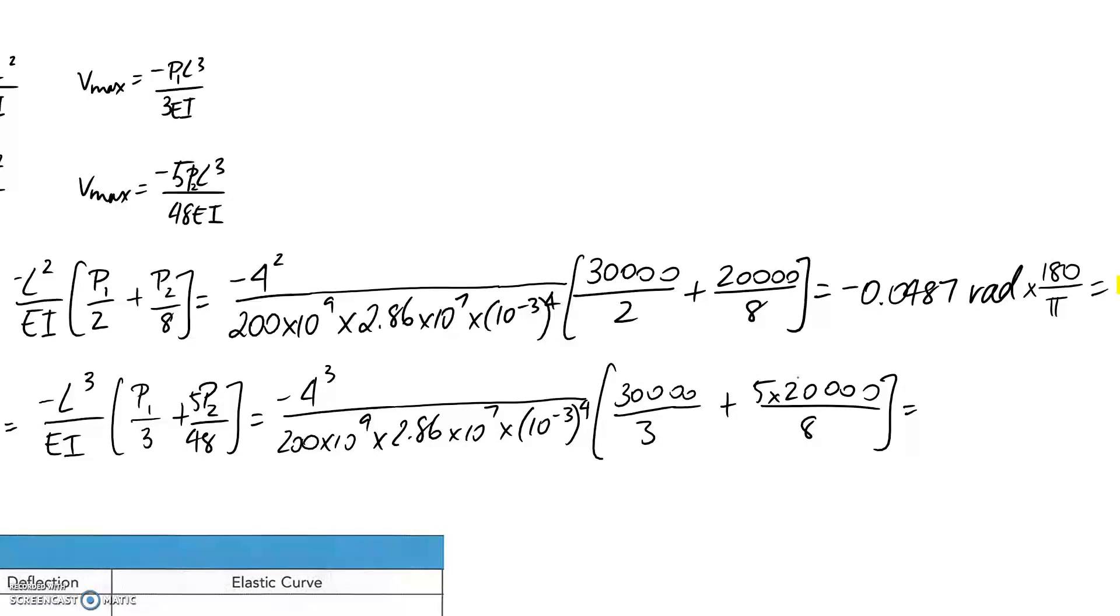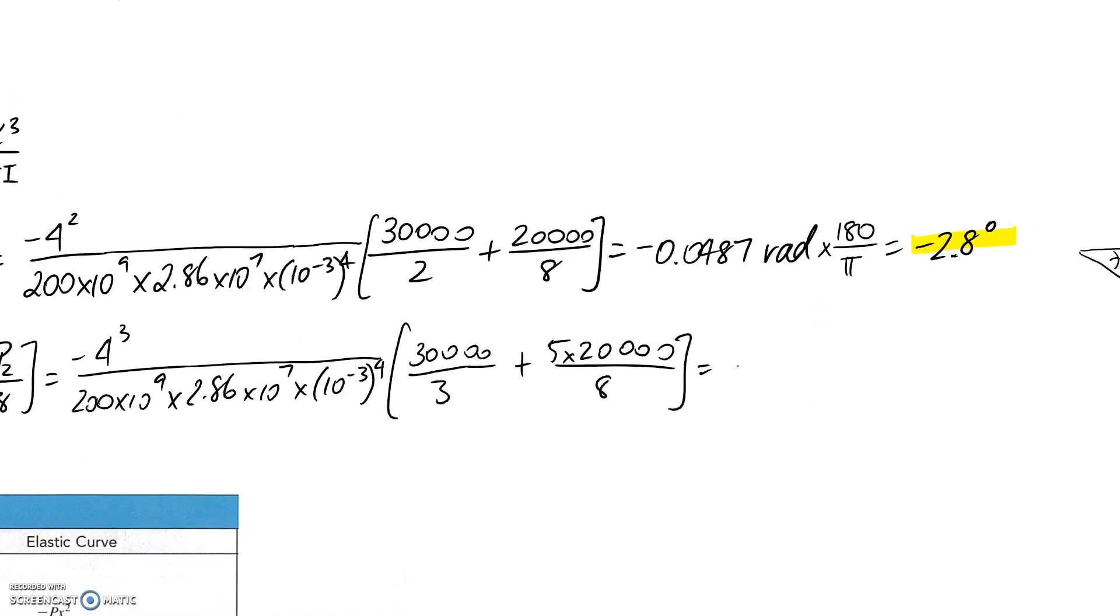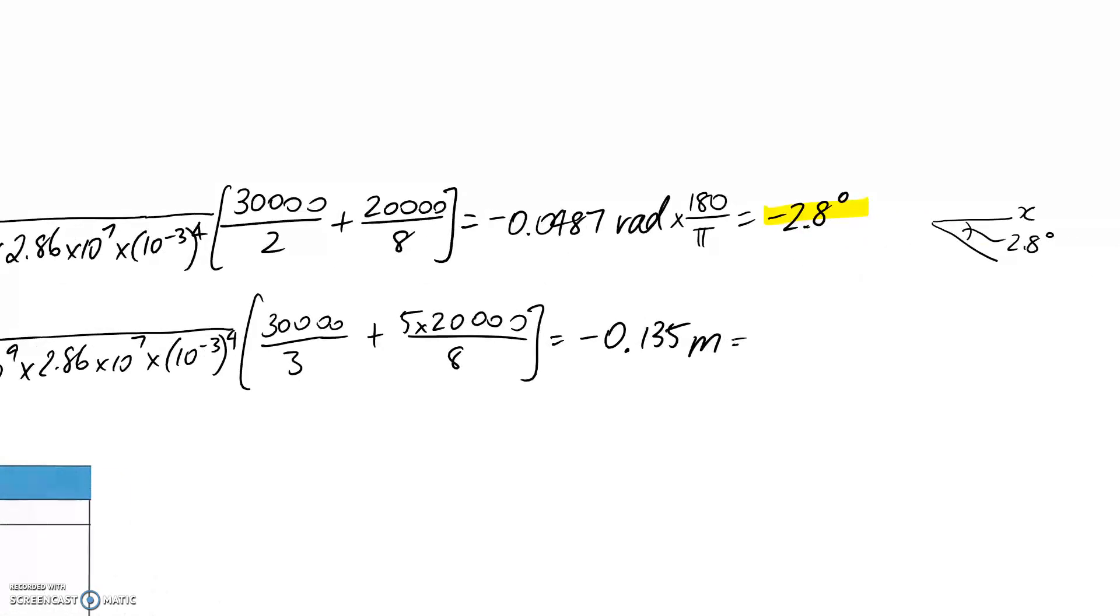So typing all of that into a calculator, the answer comes out to negative 0.135. Everything's in base units, so the answer comes out in the base unit of meters. If you then want to convert it, you can say you want to go to millimeters, you need to times by 1000, so that becomes 135 in millimeters. Again, the answer's come out negative, which is just telling you that it's deflected below the axis rather than going above the x-axis.